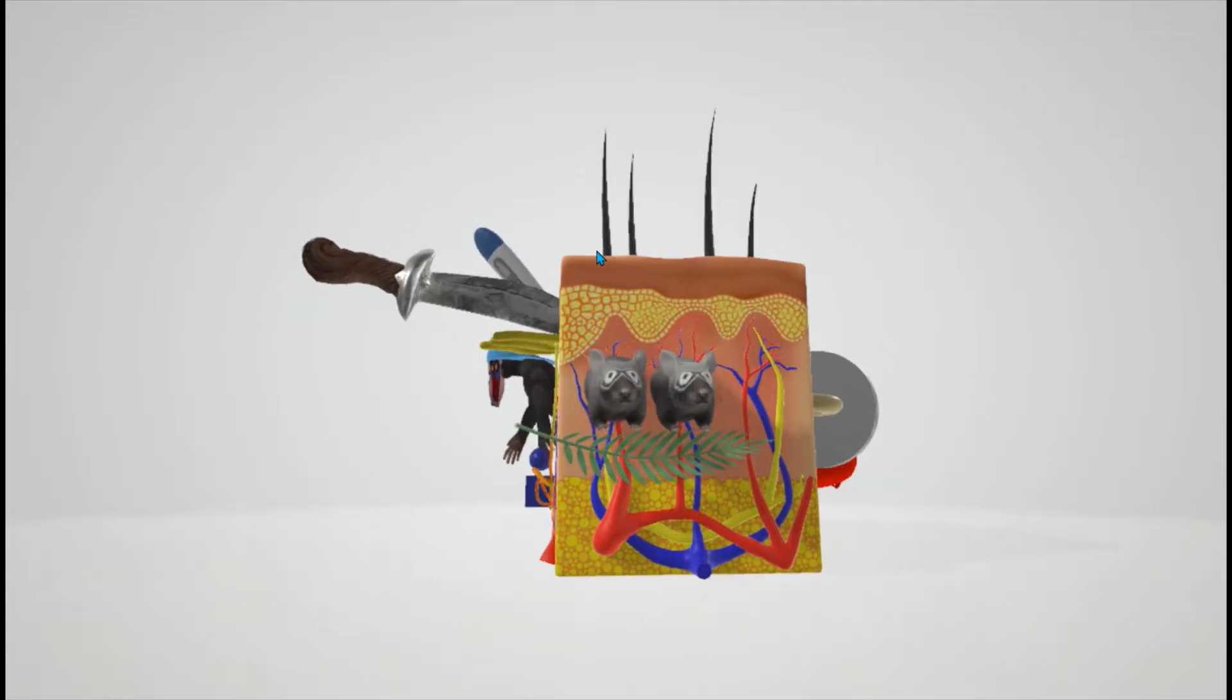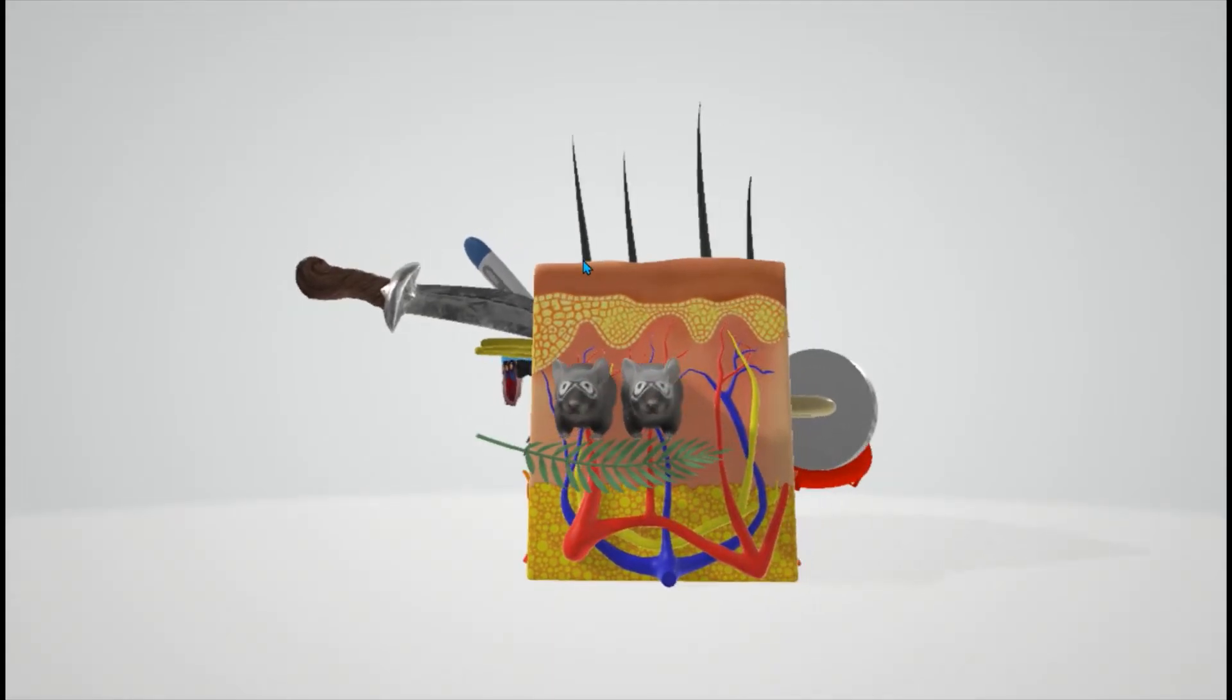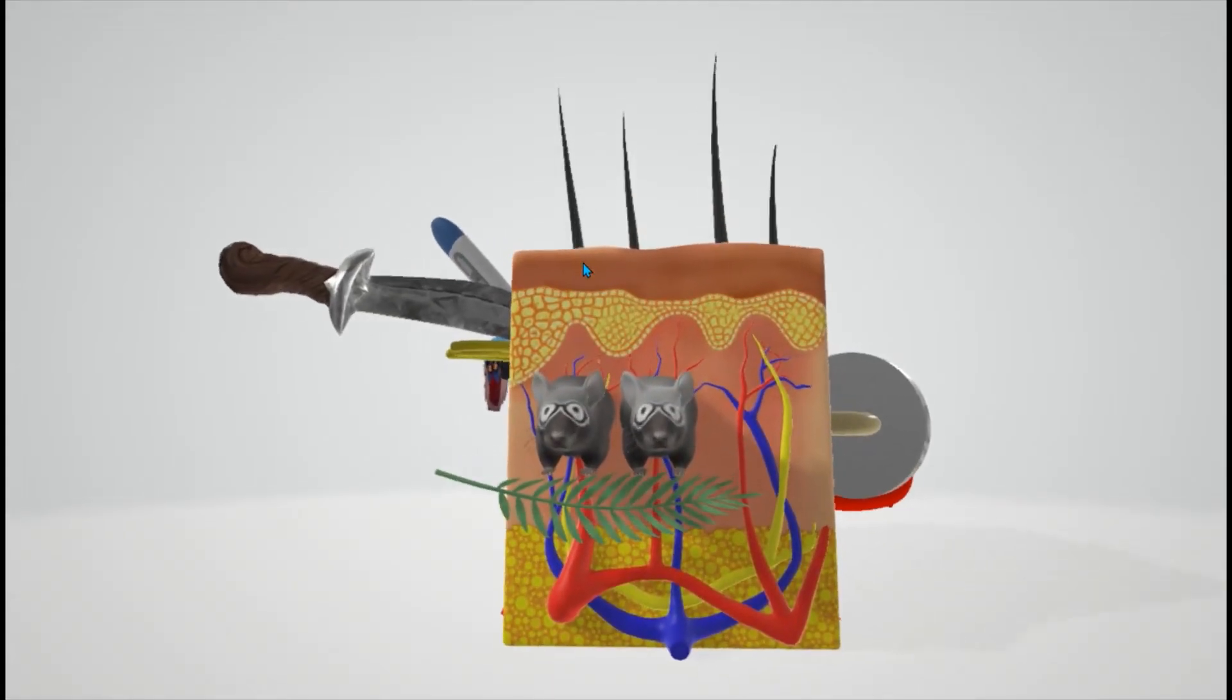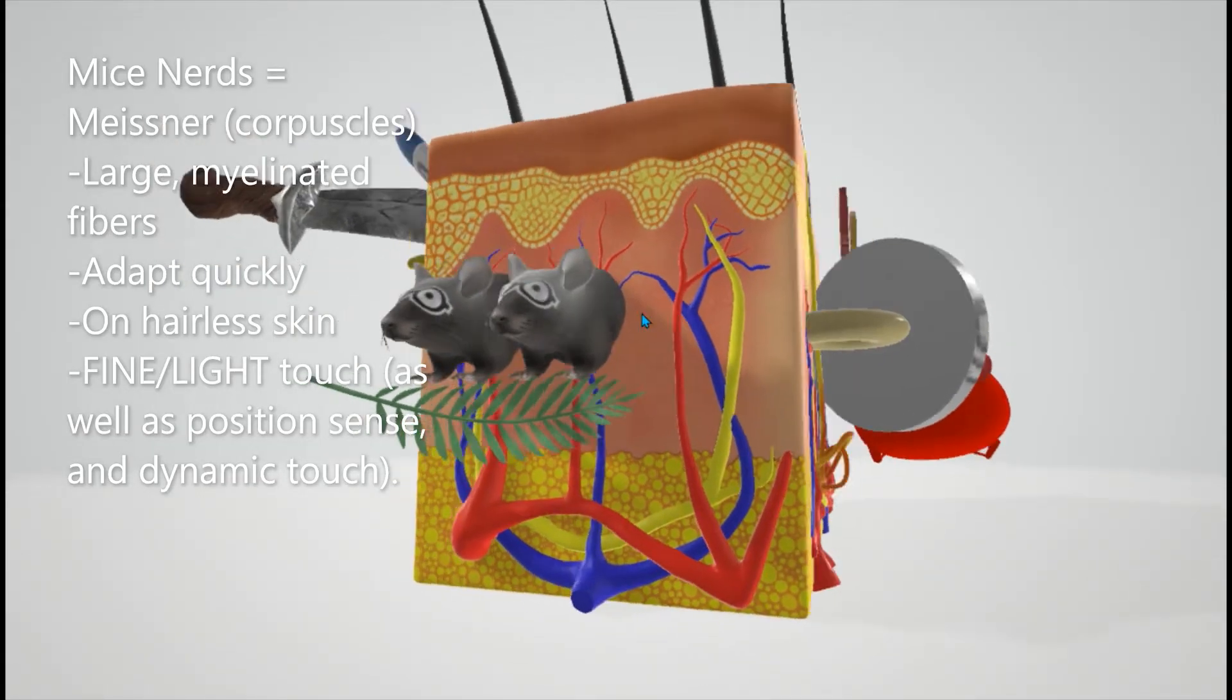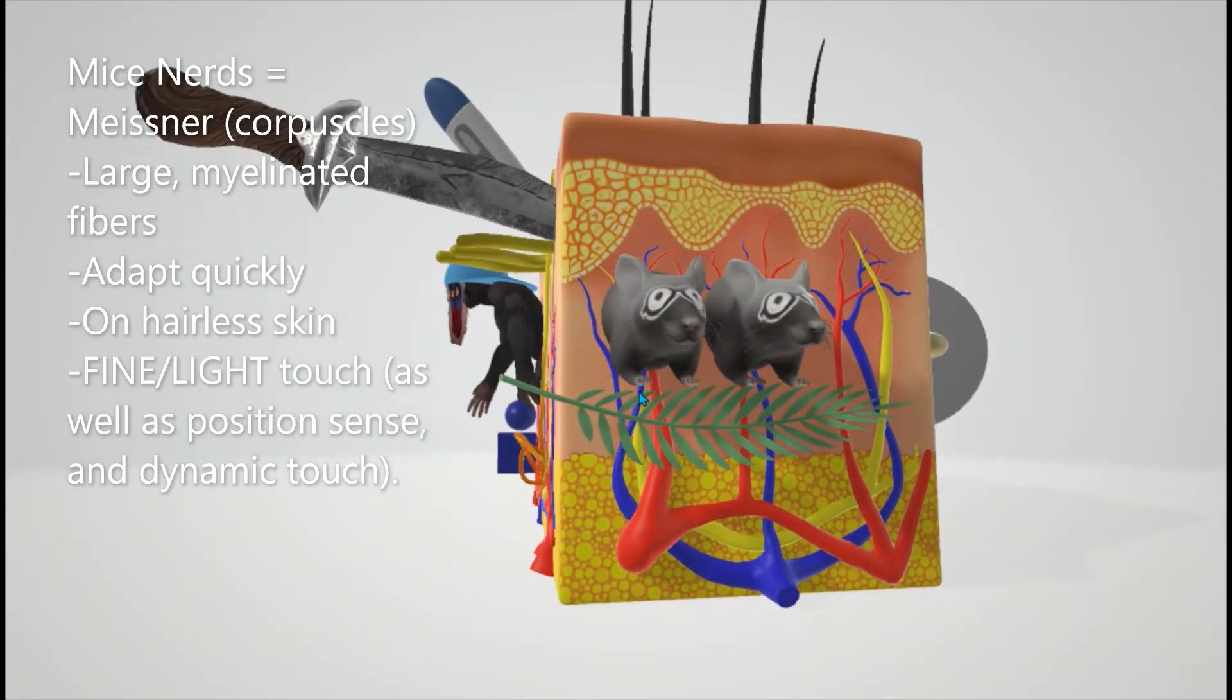Let's start with the Meissner's corpuscles. Meissner's makes me think of mice nerds, like mice, like two mice or more that are nerds. If I were to picture them ahead, I would look at these guys. And they're touching this little leaf over here, this little leaf, it's a little light.